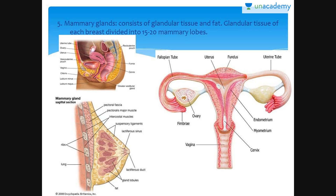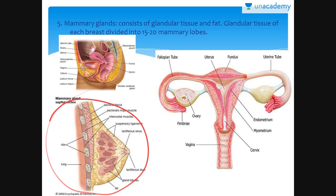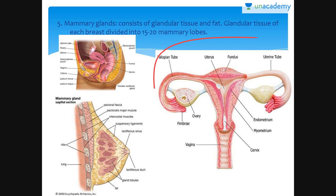The last part of the female reproductive system is the mammary glands. It consists of glandular tissue and fat. Glandular tissue of each breast is divided into 15 to 20 mammary lobes. Mammary lobes contain clusters of cells called alveoli.